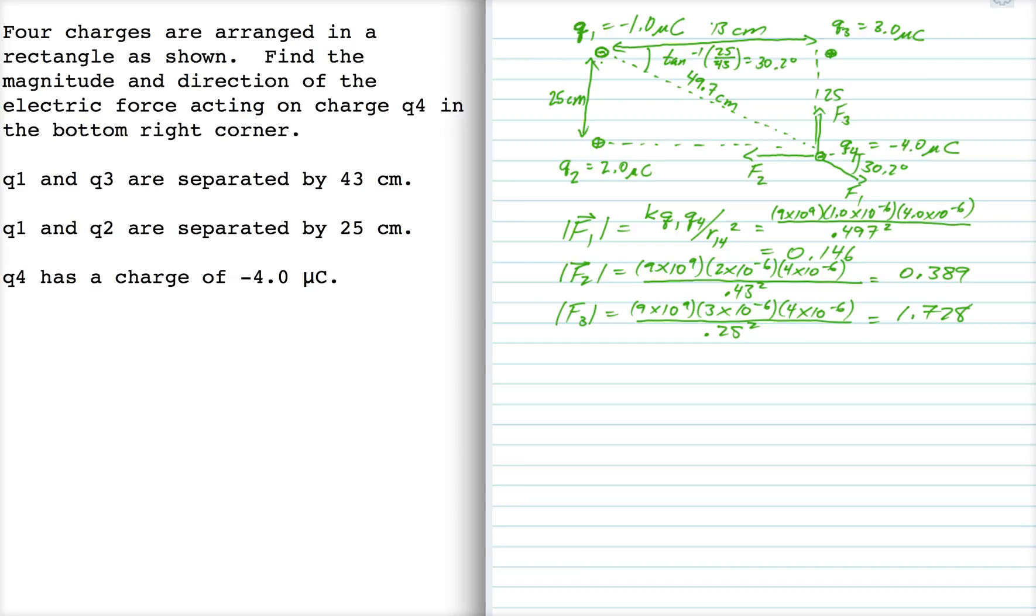Alright, so now we split each into x and y components, right? So the x component of F1 is 0.146 times the cosine of 30.2. So that's 0.126.